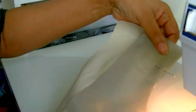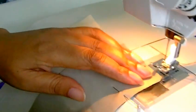I've got the lining and the front section of the garment. They are right side to right side. And I'm going to sew along this edge here.